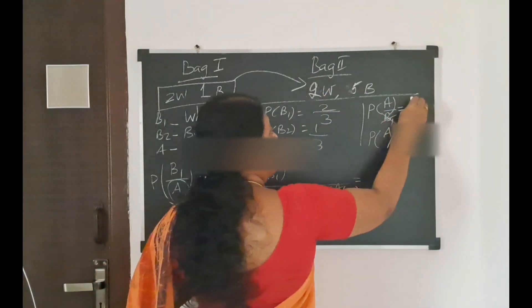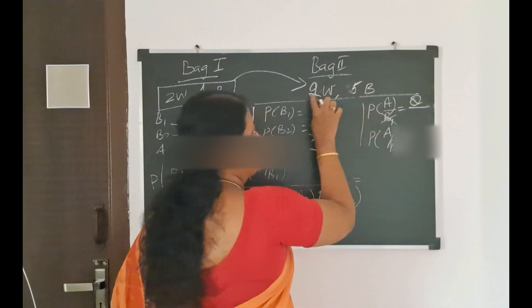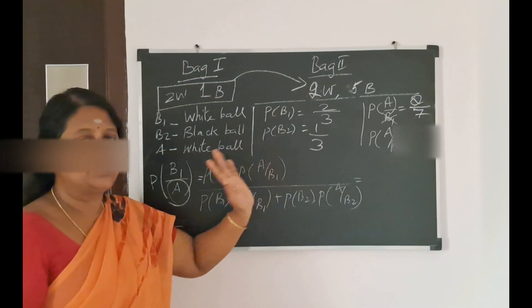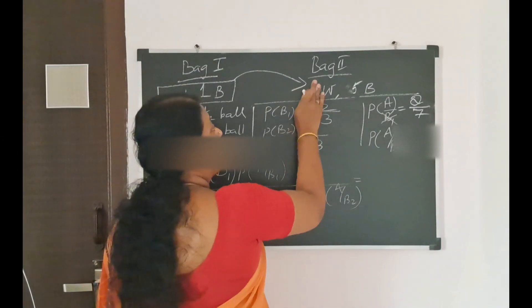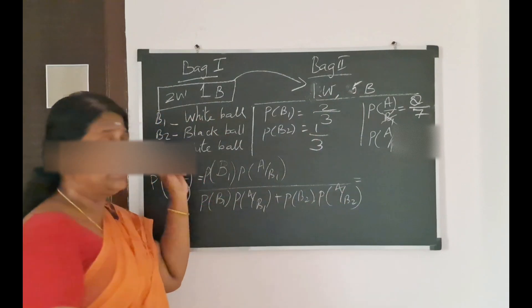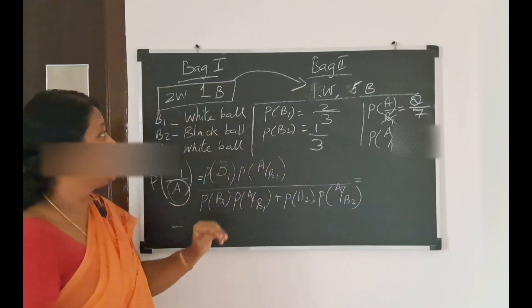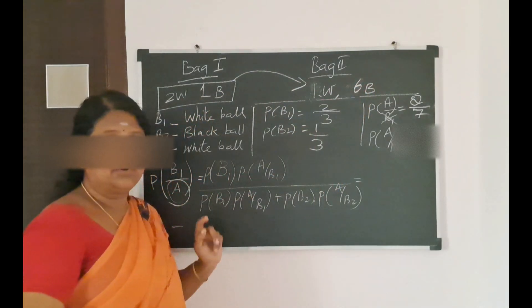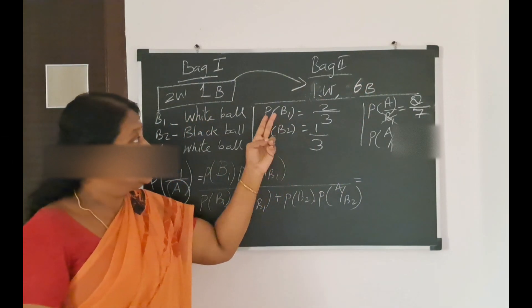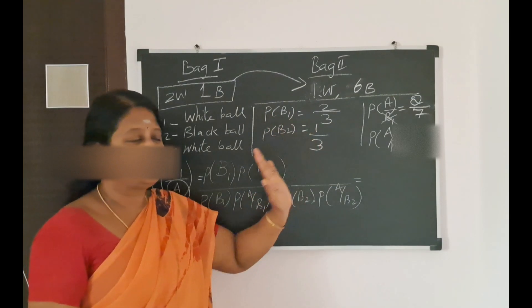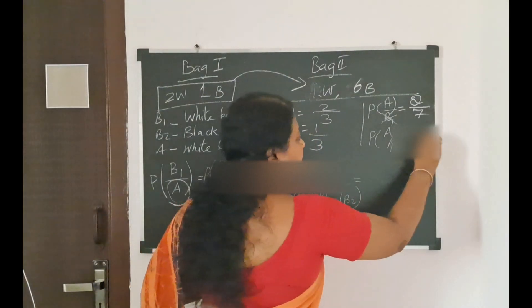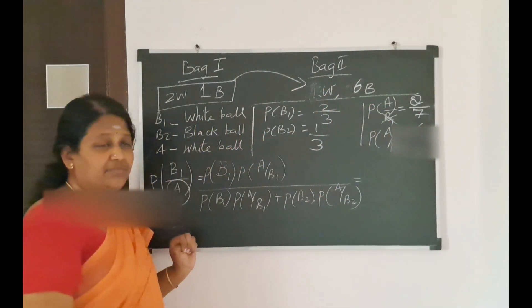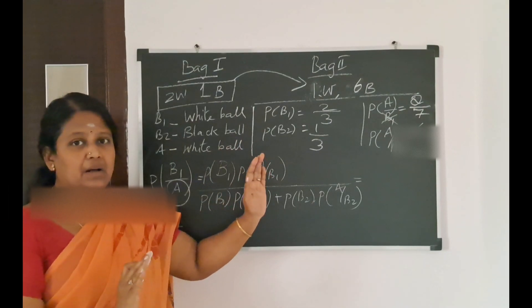The total ball count in Bag 2 is 7. If a black ball is transferred instead, the original 1 white and 5 black plus 1 black gives 6 black balls. So P(A|B2) is 1 by 7. The total number of balls will be 6 plus 1, so 7.